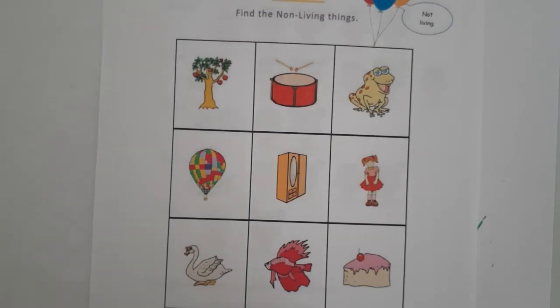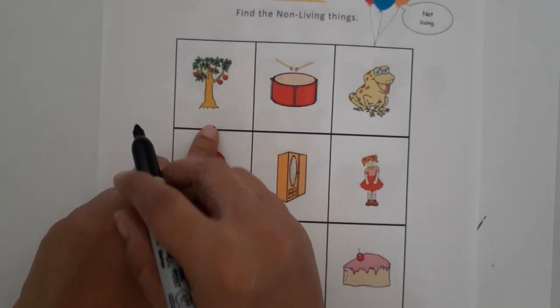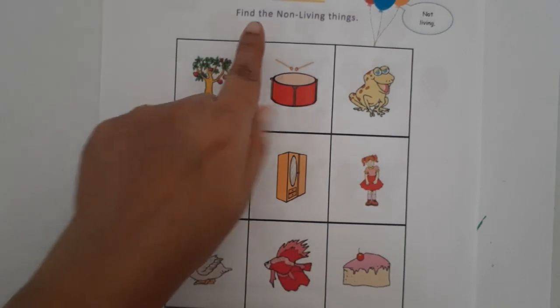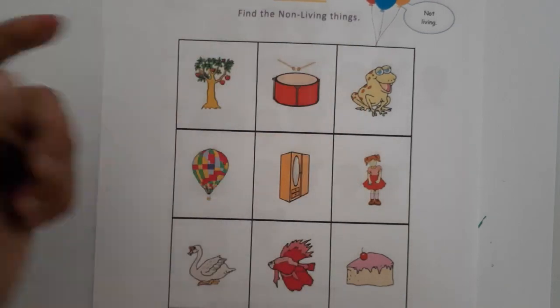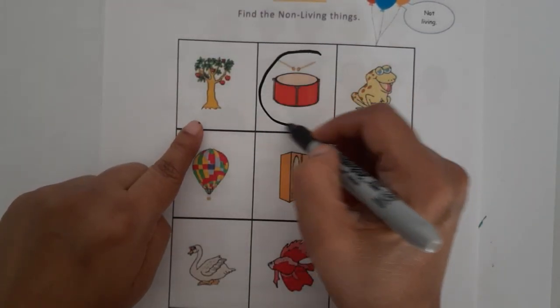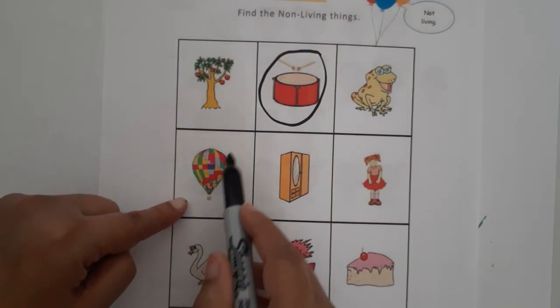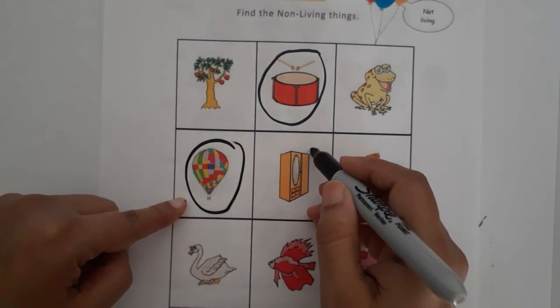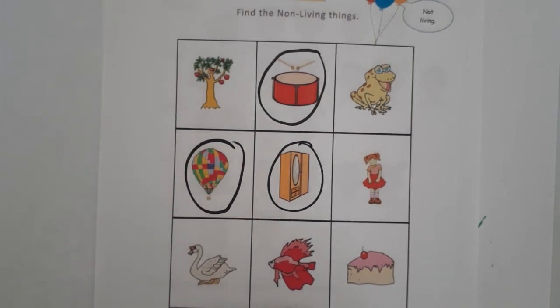In this activity, children identify whether things are living or non-living. A tree is living. Here's a 'find the non-living things' activity. Drums are non-living, a frog is living, a parachute is non-living, and an almirah is non-living. A girl is living, fish are living, and cake is non-living. Children can identify different objects in these activities.